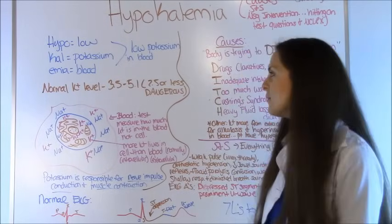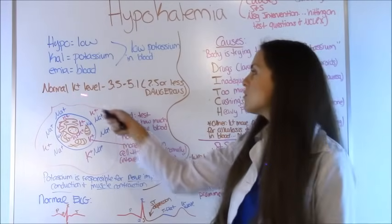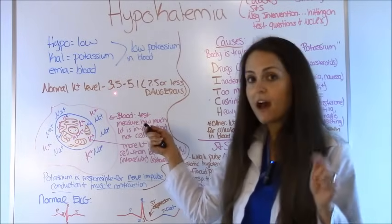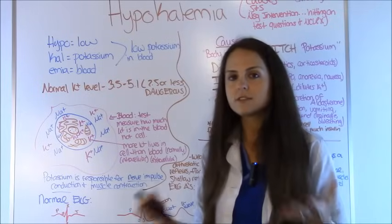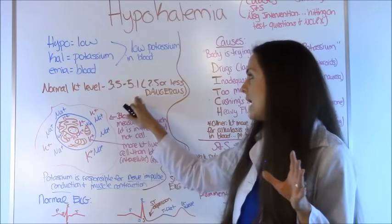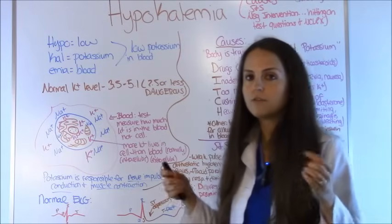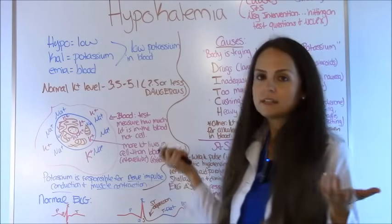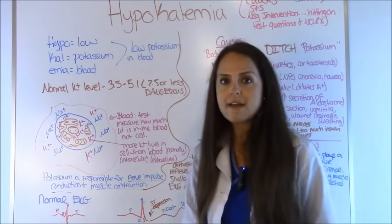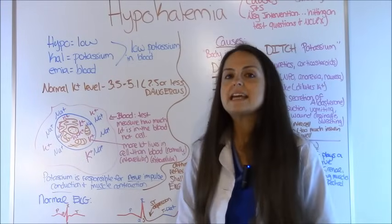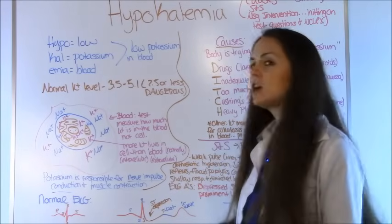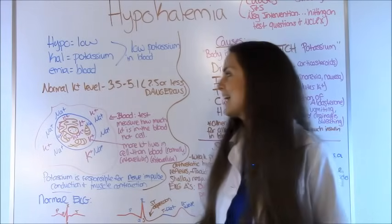So what does that mean? A normal potassium level is 3.5 to 5.1 — this depends on the lab, but generally this is the range; some say 5.2 or 3.4, but that's what I go with. And anything less than 2.5 is dangerous. You need some major intervention, and we'll talk about all those interventions here in a second.